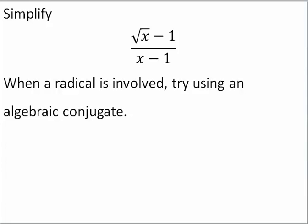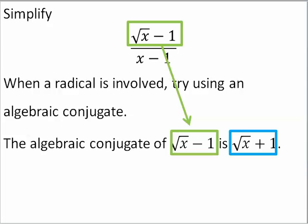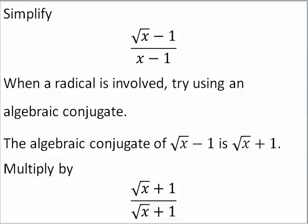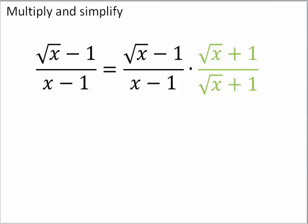When a radical is involved, I recommend that you try using an algebraic conjugate. Look at the numerator. What is its algebraic conjugate? The algebraic conjugate of radical x minus 1 is radical x plus 1. So we are going to multiply the expression by radical x plus 1 over radical x plus 1. Now this may seem to be something that doesn't simplify it, but you will see it works very nicely.